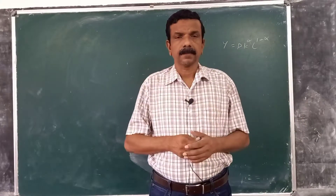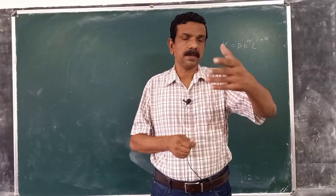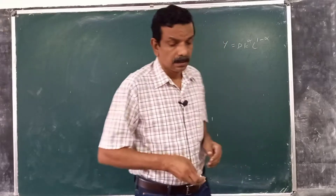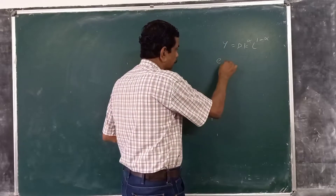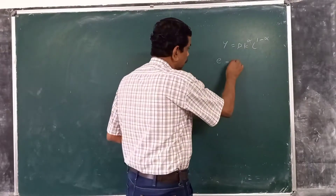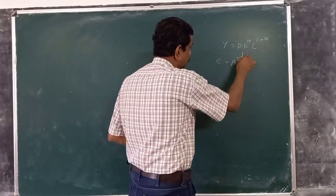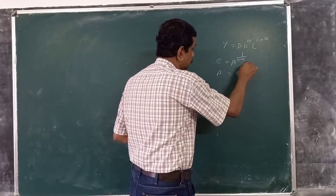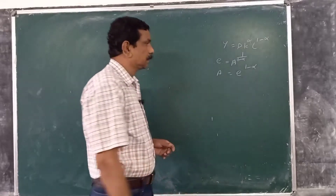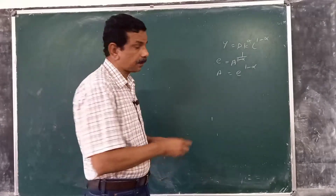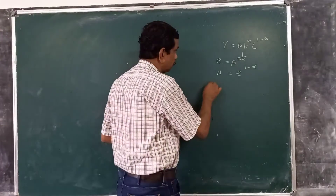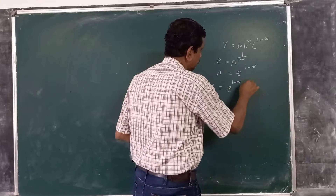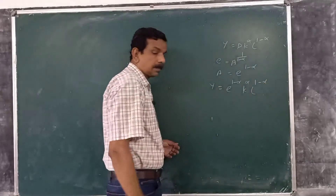But before proceeding, it is convenient to define a new measure of productivity. We define a variable E as equal to A raised to 1 by 1 minus alpha, so that A is equal to E raised to 1 minus alpha. Thus the production function becomes y equal to E raised to 1 minus alpha, times k raised to alpha, times L raised to 1 minus alpha.